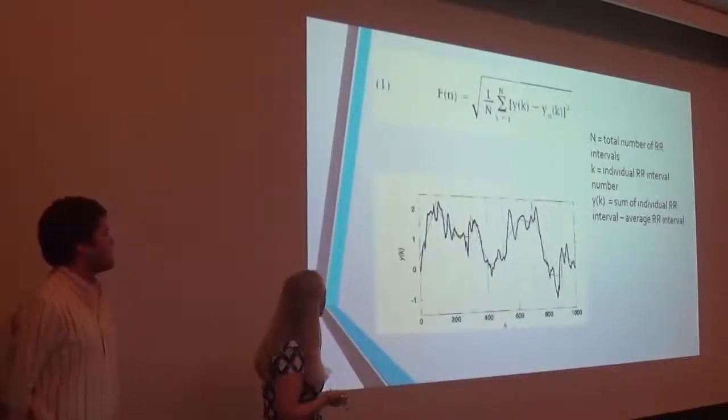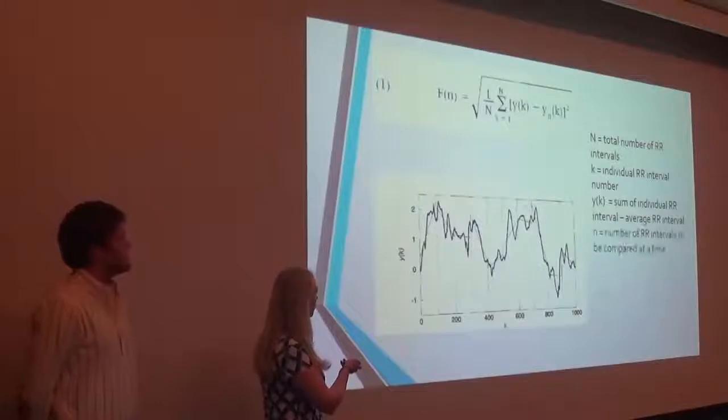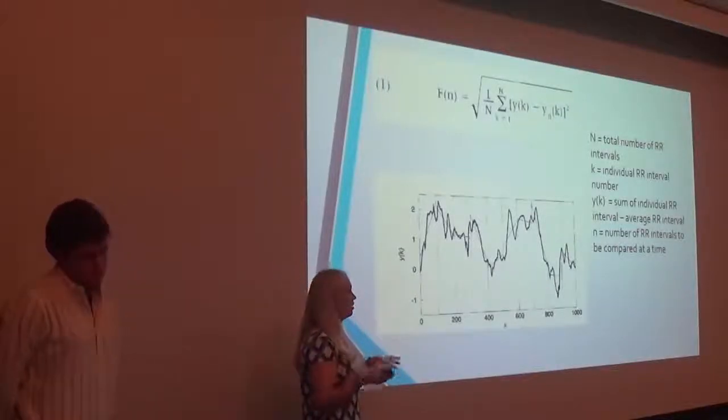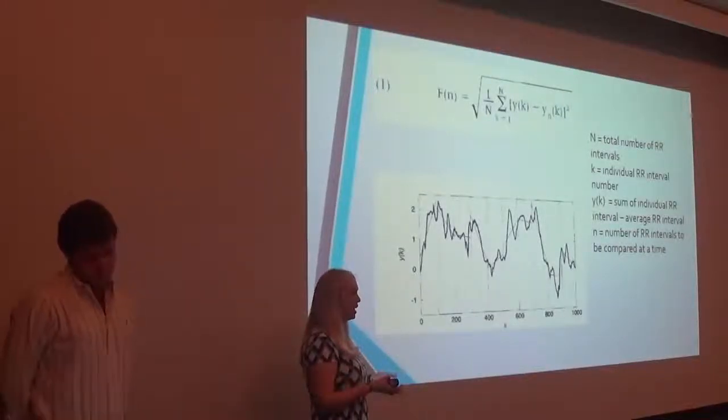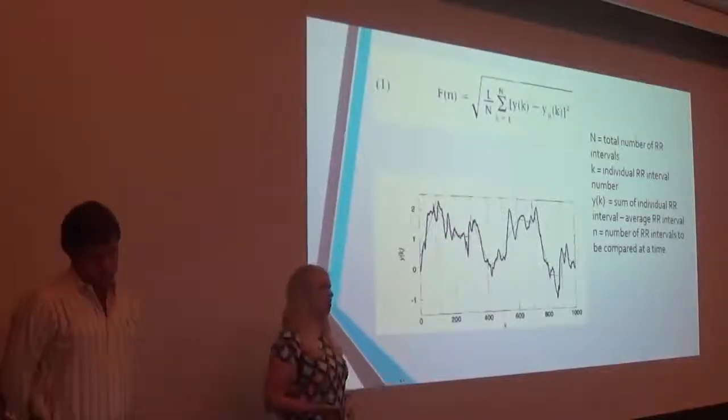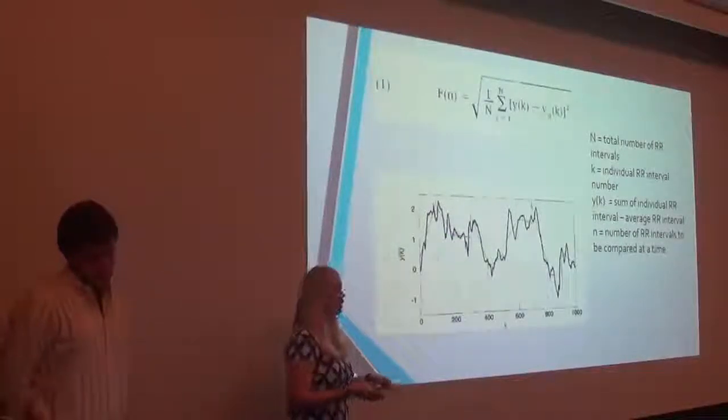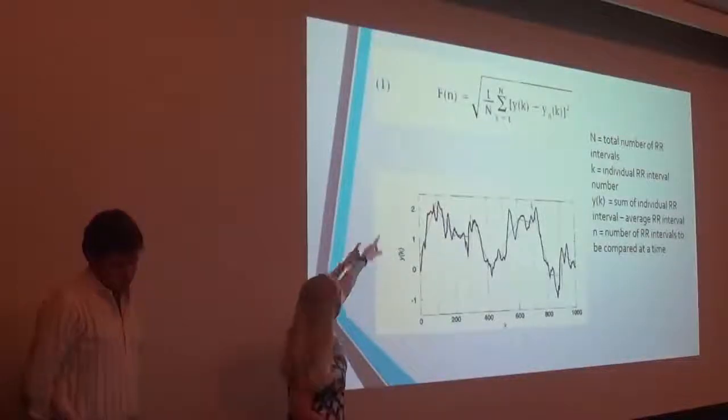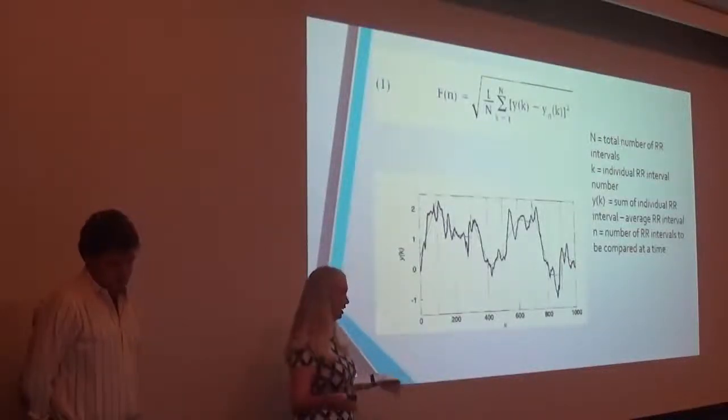So n is the number of heartbeats that you're looking at at one time. So the overall goal is to look at varying n, so maybe look at 100 heartbeats at one time, and then look at 200 at a time, and see how this f(n) equation varies with that varying n.